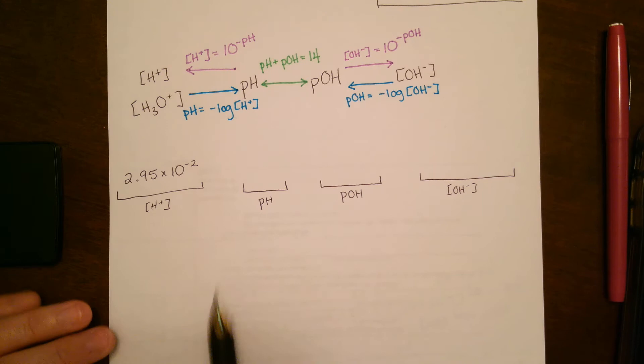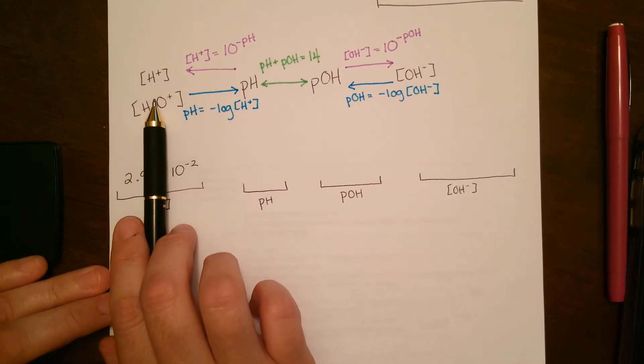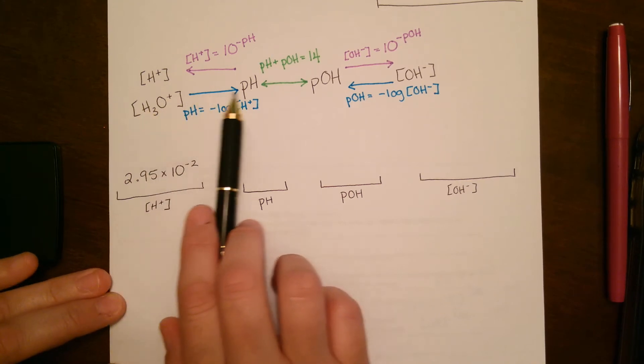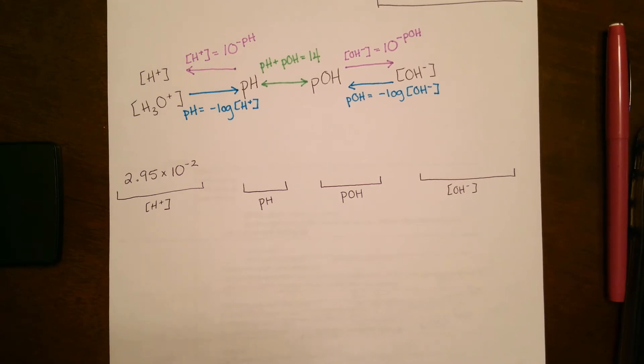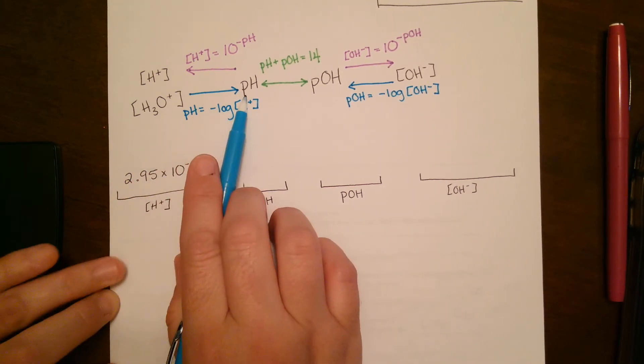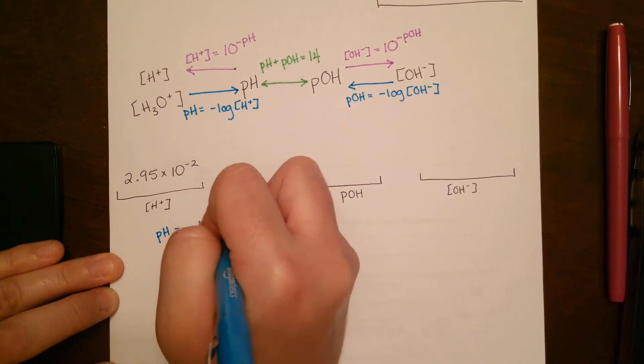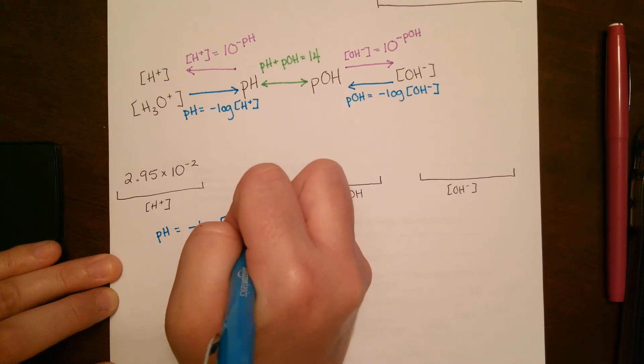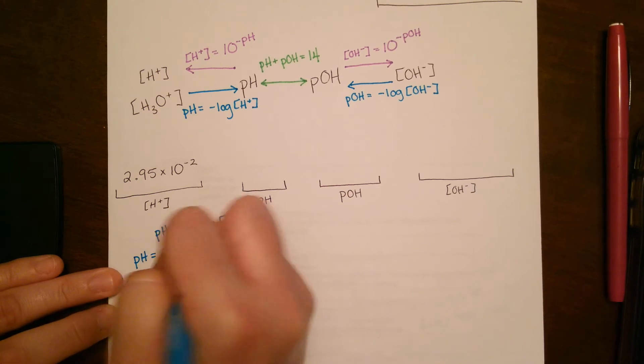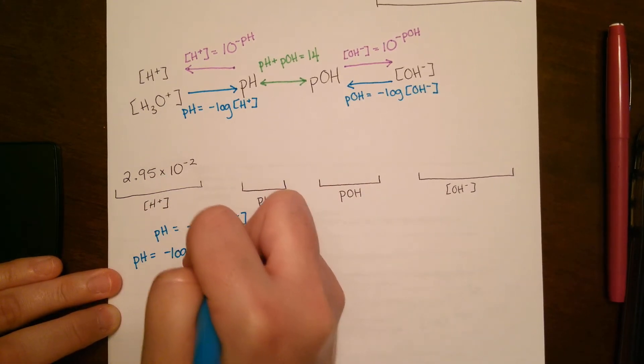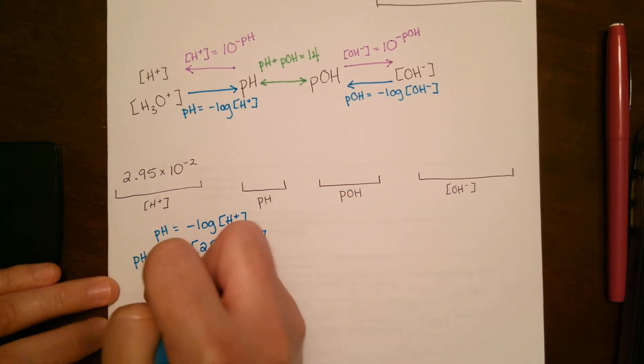So just like train tracks, you can only go one direction or the other direction. So since we started with the hydronium concentration, the first thing we're going to have to do is go to pH. So if you're taking a look at those arrows, the arrows in one direction from hydronium to pH is that the pH is equal to the negative log of H+. So we see the pH is equal to the negative log of our hydronium concentration, which is 2.95 times 10 to the negative 2. So let's go ahead and plug that in.